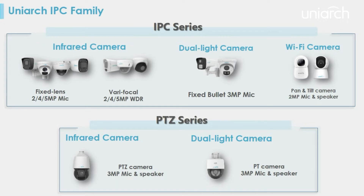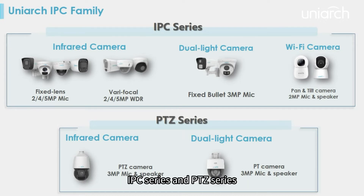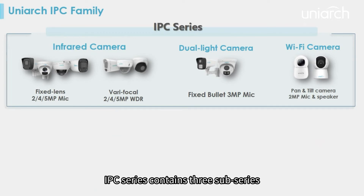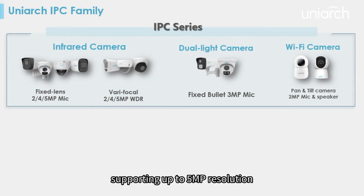As shown in the product layout, Uniarch IP cameras are classified into two categories: IPC series and PTZ series. The IPC series contains three sub-series and has multiple appearances such as bullet, dome, and turret, supporting up to five megapixels resolution.